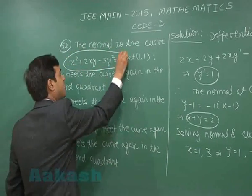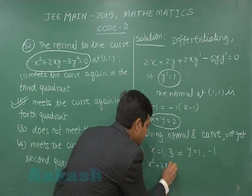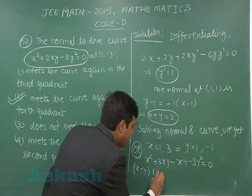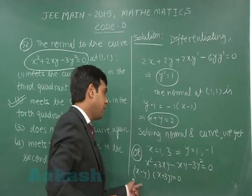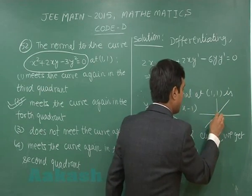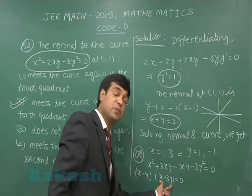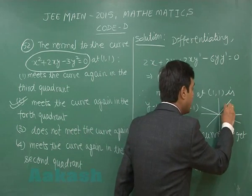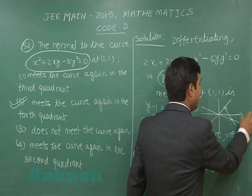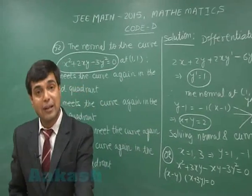Alternatively, this curve represents a pair of lines: x² + 3xy − xy − 3y² = 0. One line has slope 1 (at 45°) and the other has slope −1/3. Drawing these lines, a normal at (1,1) clearly intersects again in the fourth quadrant. So the answer is option 2 — meets the curve again in the fourth quadrant.